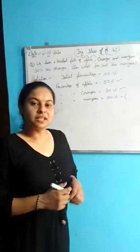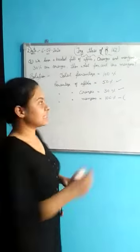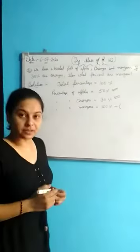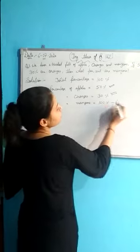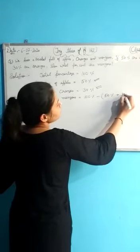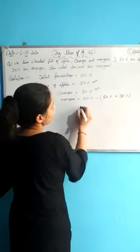Now to get percentage of mangoes, what will you do? Just add the percentage of apples as well as oranges and subtract it from 100%. So it will come 100% minus 50% plus 30%. What will you get?